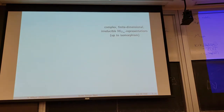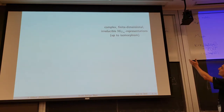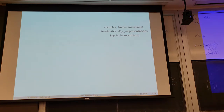An obvious question would be: what happens if I replace the symmetric group, which is the Weyl group of type A, by some other Weyl group? In this case, I'm going to look at the Weyl group of type C. This is also a classical result — the irreducible representations are in one-to-one correspondence with bipartitions of M. And so the big question is: what do I put on the left?